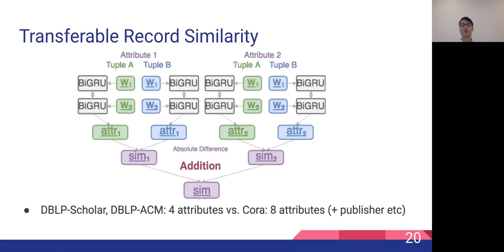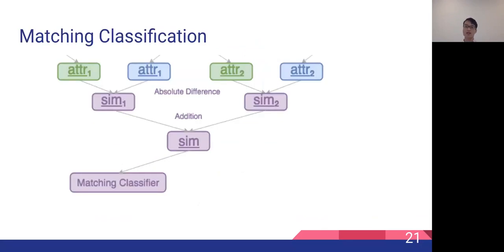We add those similarity vectors to represent the overall similarity between the two tuples. This addition operation is critical because it ensures the final dimension is the same regardless of the number of attributes in the scenario. This allows us to transfer network parameters between scenarios with different numbers of attributes — for example, Google Scholar has four attributes while the Quora scenario has eight. We can transfer all network parameters between these scenarios without any architectural modifications. Finally, we pass this similarity vector to a feed-forward matching classifier and predict a match or no-match.